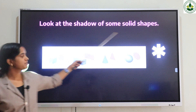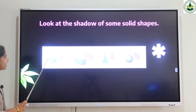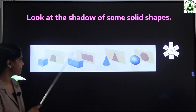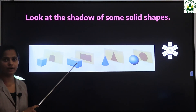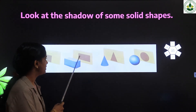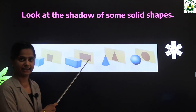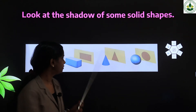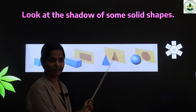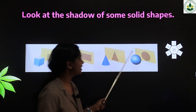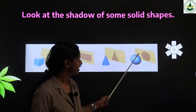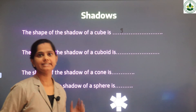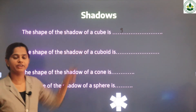Let's look at the shadows of some solid shapes together. A cube's shadow looks like a square. A cuboid's shadow looks like a rectangle. A cone's shadow is a triangle. A sphere's shadow looks like a circle.